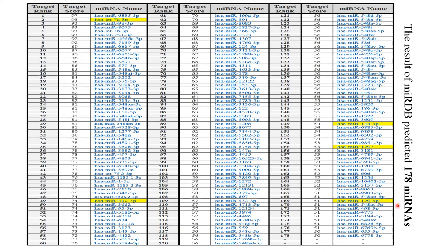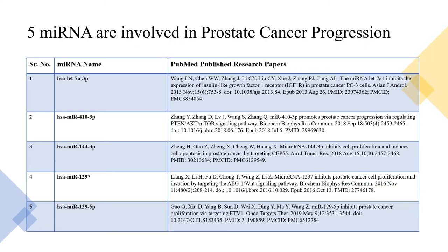These are the results from the miRDB database, which predicted 178 microRNAs. Here you can see the target frame showing the serial number, the target score showing the confidence score, and the targeted miRNA name. It starts from one and ends at 178, so a total of 178 microRNAs were predicted using the miRDB database.